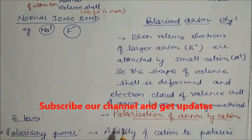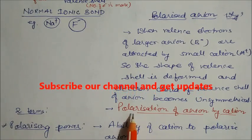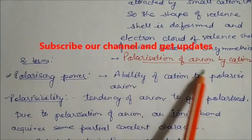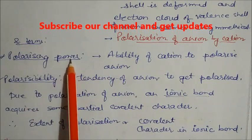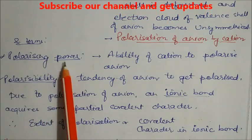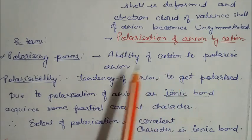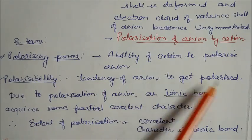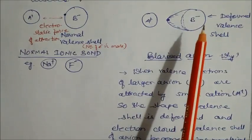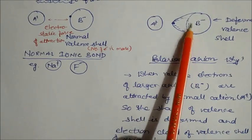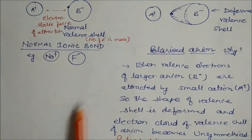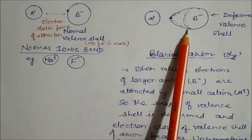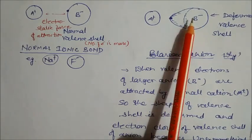There are two terms associated with polarization: polarizing power and polarizability. Polarizing power is the ability of the cation to polarize the anion. Polarizability is the tendency of the anion to get polarized. A smaller cation has higher polarizing power, and a larger anion has higher polarizability.